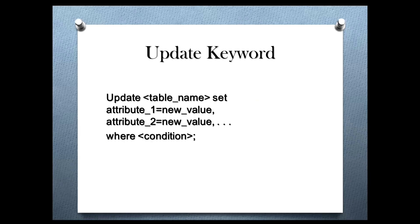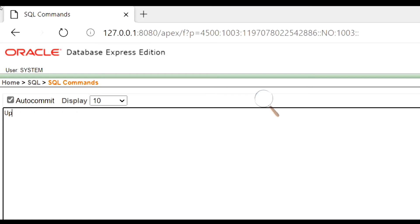Update keyword. The update keyword is used to update the values of the tuples. We have to give the condition of the tuple where we want to change the values. Here is the syntax. Let's see an example. We will change the name and salary of the employee having employee ID as 1002.